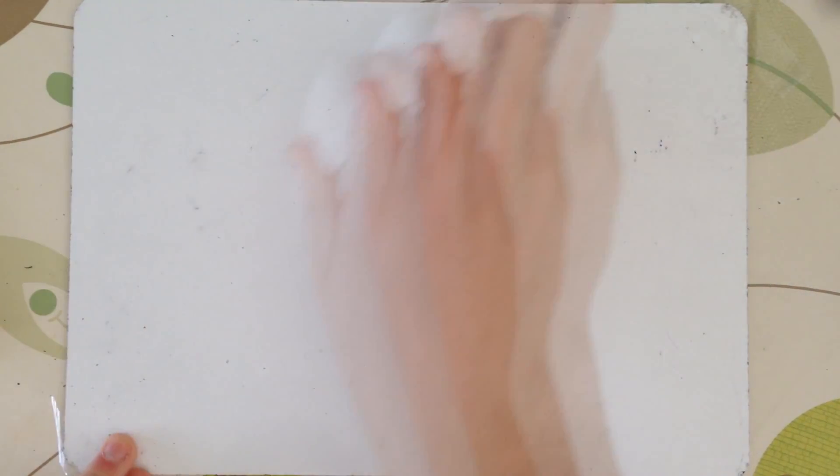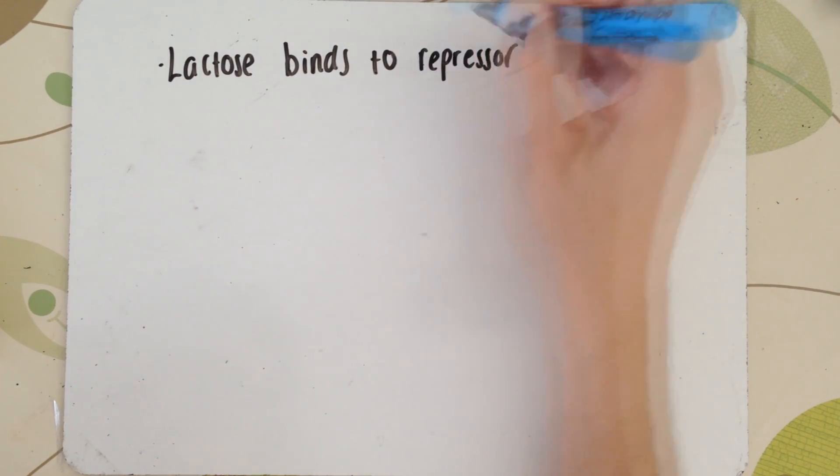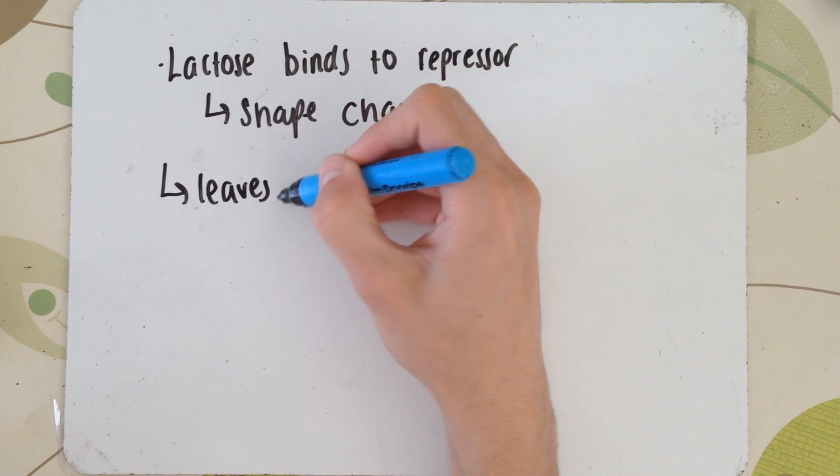So, let's think what essentially happens here. The lactose, the inducer, comes in and binds to the repressor molecule at a different site. This changes the shape of it, which therefore means it has to leave the DNA molecule.